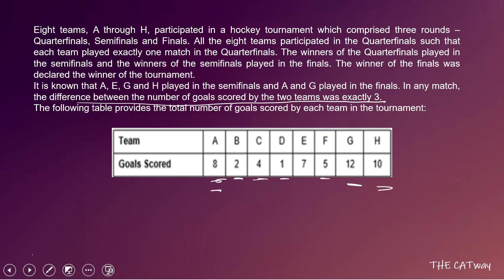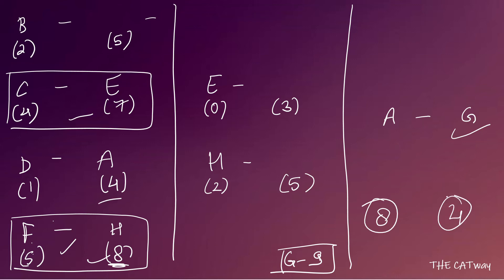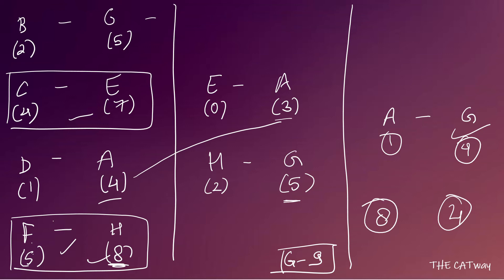Let's try placing A in the quarter-final against D. A's total is 8 goals; if A scores 4 against D in the quarter-final, 4 goals remain. A cannot score 5 goals in the semi-final with only 4 remaining, so A would play the other semi-final. Up to the semi-final A scores 4 plus 3 equals 7, meaning A scores 1 goal in the final. So G needs to score 4 goals to win the final.